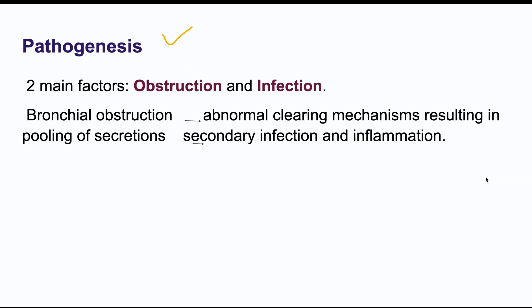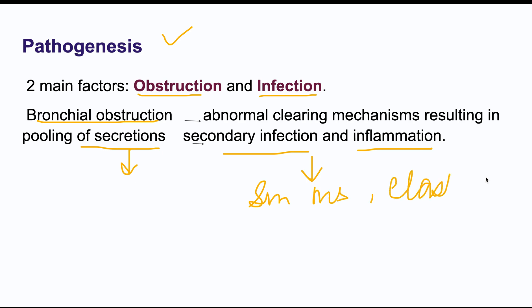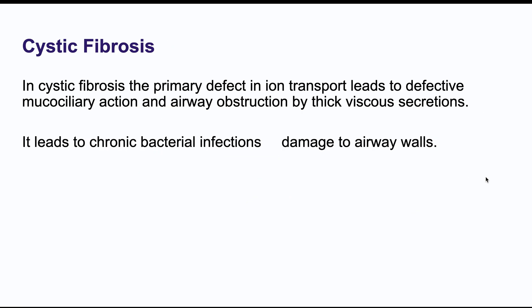Regarding pathogenesis, the two main factors are obstruction and infection. Bronchial obstruction impairs normal mucus clearing mechanisms, leading to pooling of secretions. Stasis of secretions causes secondary infection and inflammation, which destroys the smooth muscle and elastic tissue of the bronchi, resulting in permanent dilation — bronchiectasis.